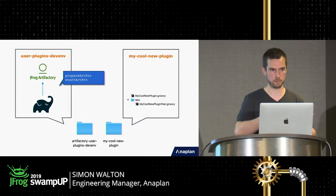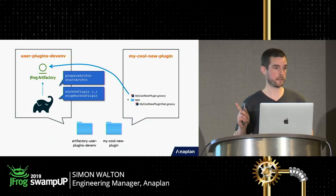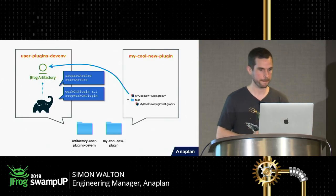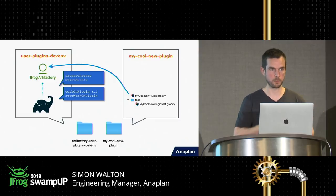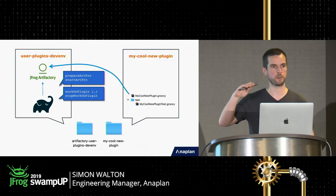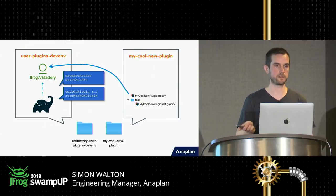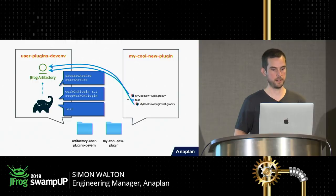You will need a real enterprise license — JFrog have no problem with you using one for integration tests. There are instructions in the readme on how to license it. Then you run `gradle workOnPlugin` with the name of your plugin — by default it looks one directory up, finds your plugin directory, and symlinks your plugin file and test file straight into Artifactory's plugins directory. Then you run `gradle test`, which runs all the tests in your test file against a real Artifactory. It's a real Artifactory you can play around with via the UI.